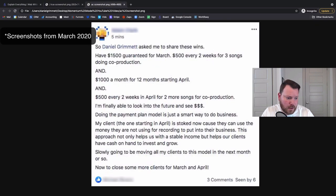And then we got Adam Clark. $1,500 guaranteed for March, $500 every two weeks and three songs doing co-productions. It's one project. And $1,000 a month for 12 months starting in April. It's another project. $500 every two weeks starting in April for two more songs, co-productions. You can have different setups based on the client's needs. So you're going to see all different variations of this model. Again with Adam, probably I'd say actually a little higher, probably 50% of his clients he does this with.